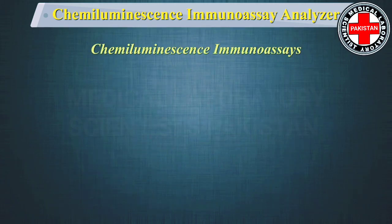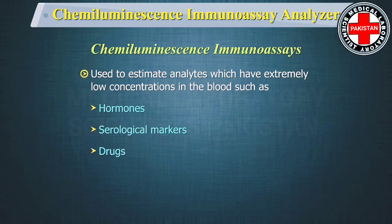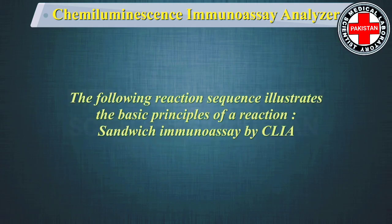Chemiluminescence immunoassays are used to estimate analytes which have extremely low concentrations in the blood, such as hormones, serological markers, and drugs. Chemiluminescence immunoassay is a method to determine the concentration of samples according to the intensity of the luminescence that a chemical reaction emits. The following reaction sequence illustrates the basic principles.